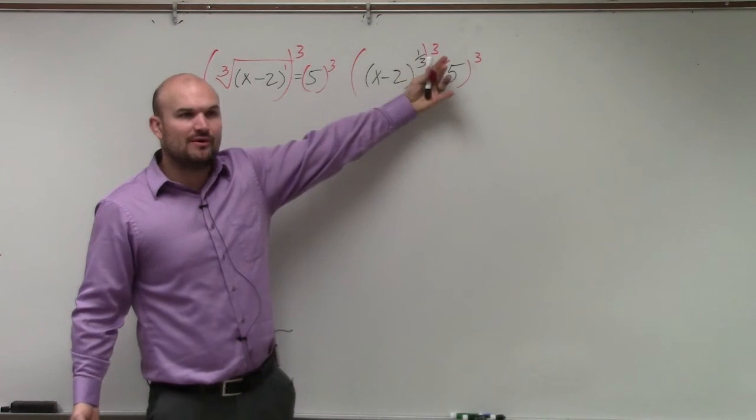Now, what happens when I raise an exponent to a power? What do you do with the powers? You multiply them. Well, what happens when I multiply one-third times three? You get one. So x minus 2 to the first power is just x minus 2 equals 125.